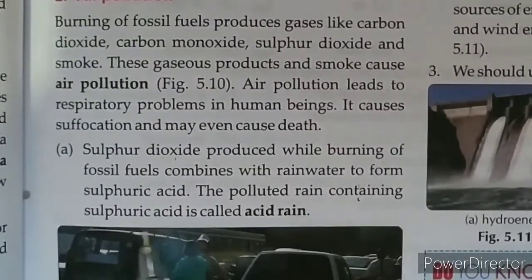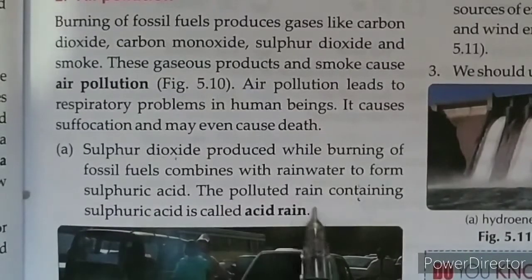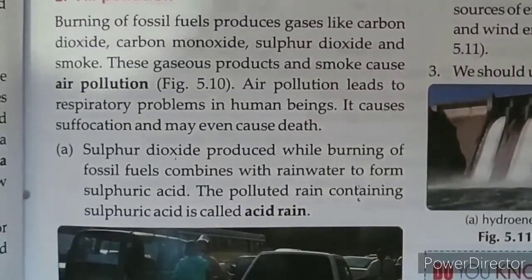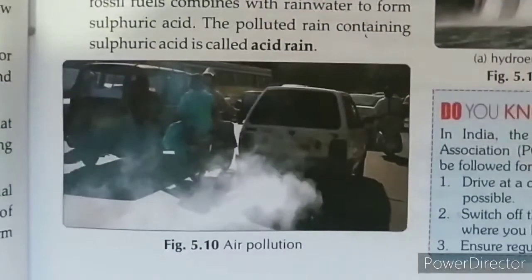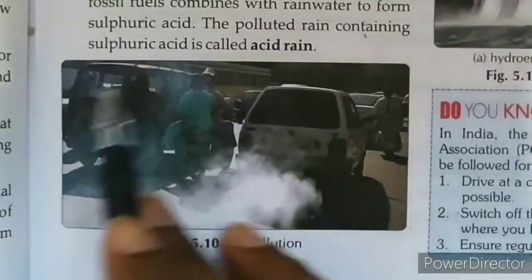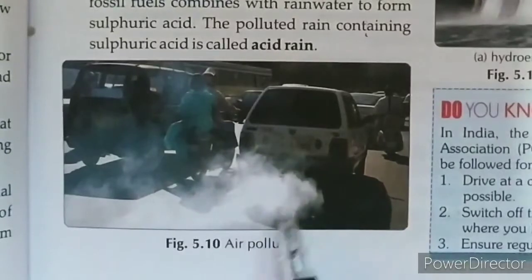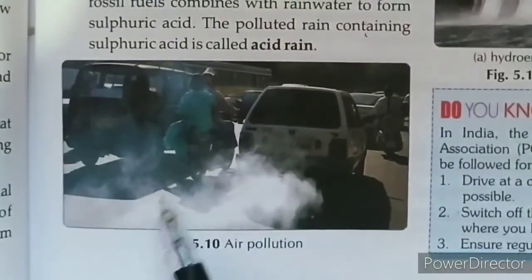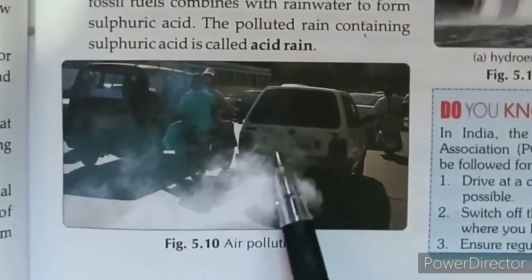This polluted rain containing sulfuric acid is called acid rain. जब acid पानी के साथ combine होकर नीचे गिरेगा, उसे acid rain बोलते हैं। This picture shows air pollution — देखो कितना धुआं निकल रहा है और air pollute हो रही है।